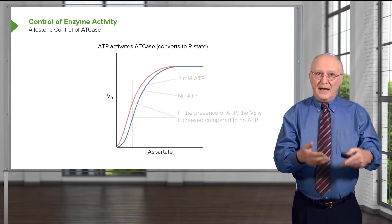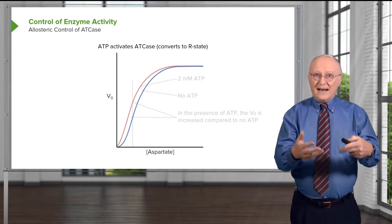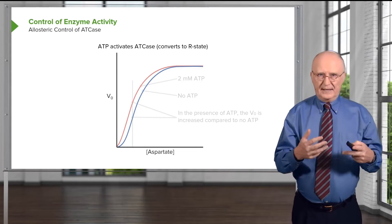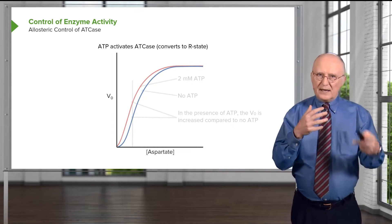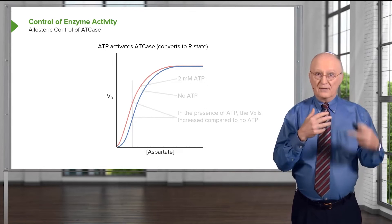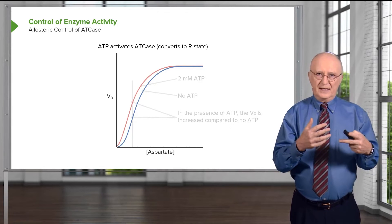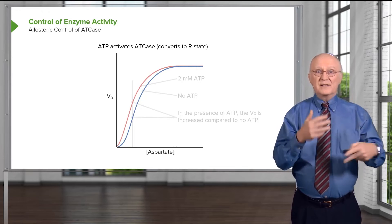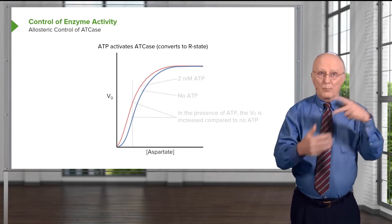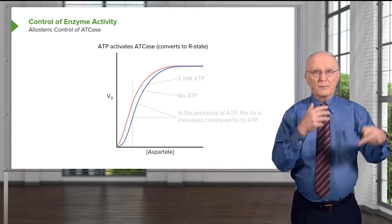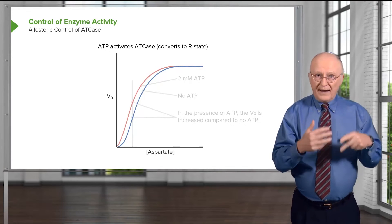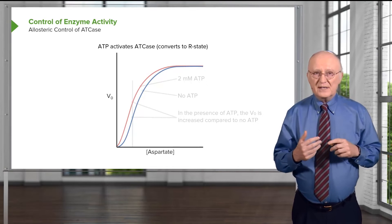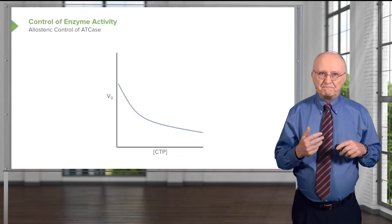ATP activates ATCase by converting it to the R state, just as aspartate converted the enzyme to the R state. This means the enzyme is able to bind more substrate more effectively and work faster, which is why we see the increase in velocity shown on the graph.